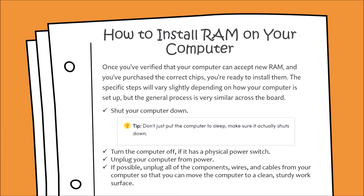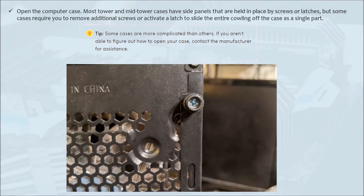Once you have verified that your computer can accept new RAM and have purchased the correct RAM, there are specific steps which vary slightly depending on your computer setup, but the general process is similar across the board. First, completely shut down your computer — do not put it to sleep, do a proper shutdown. Once shut down, turn off the physical power switch if it has one, unplug the computer from power, and disconnect all component wires and cables so you can move it to a clean surface.